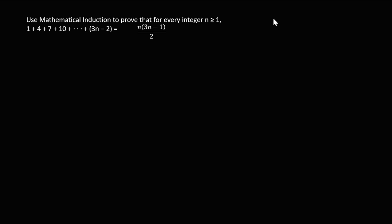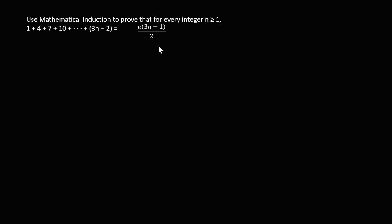We have this problem on screen which reads: use mathematical induction to prove that for every integer greater than one, one plus four plus seven plus ten, and so on until three n minus two, equals a certain sum. We have to prove that this is true for every integer.